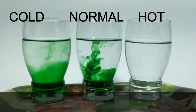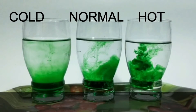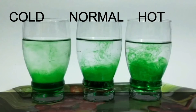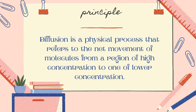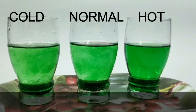Let the color diffuse for the next 20 seconds. In the meantime, let us try to understand the principle of diffusion. Diffusion is a physical process — it refers to the net movement of molecules present in a substance from a region of higher concentration to one of lower concentration. After 20 seconds, this is how the water looks, with visible differences in the color of the liquid across all three glasses.